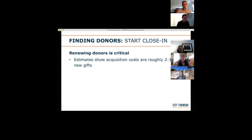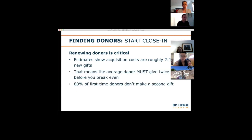There are estimates showing that for every dollar you spend acquiring a new donor, you only get 50 cents back on their first gift — meaning you can't break even on a new donor unless they renew at least once. And here's the real kicker: 80% of people who give never give again, and most of them only intended to give once. So the default state of a donor is that they're not coming back.